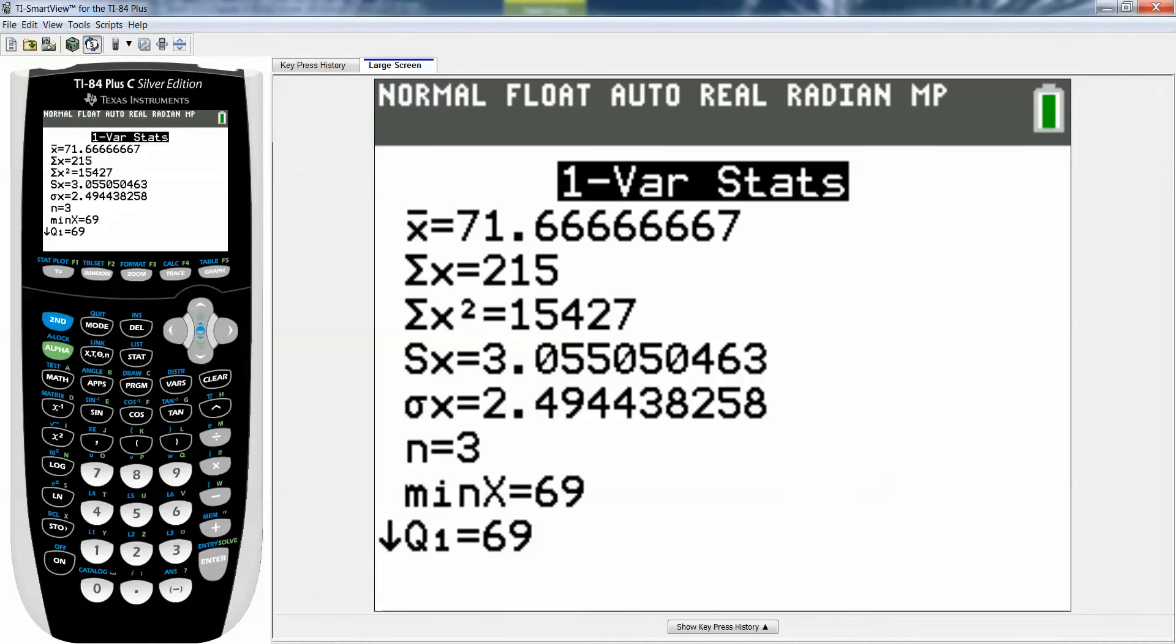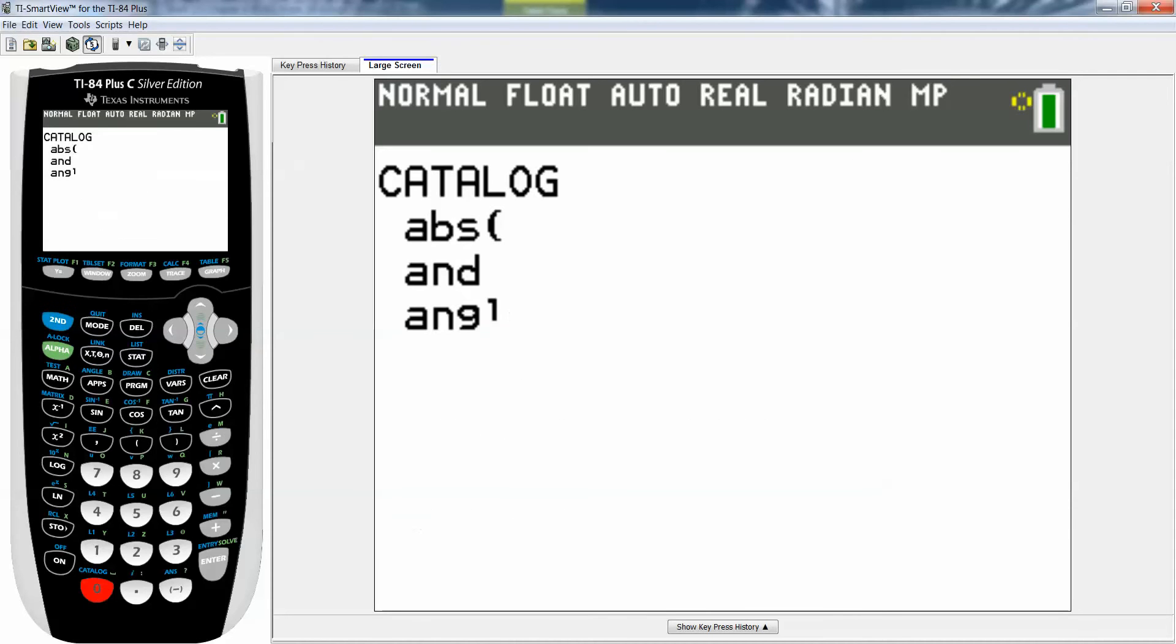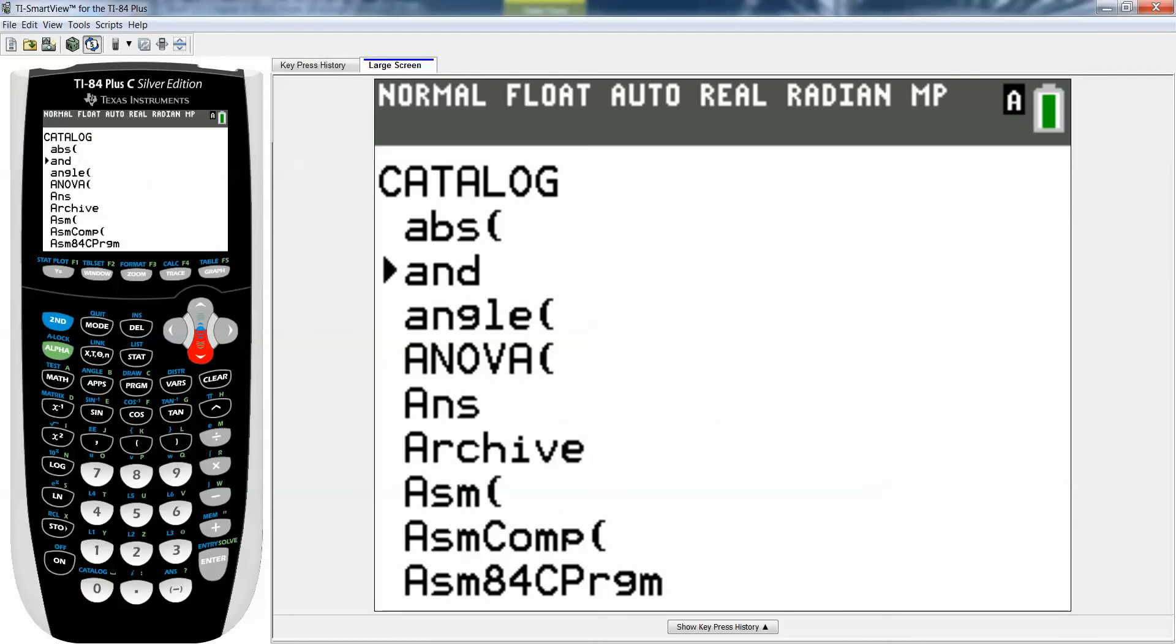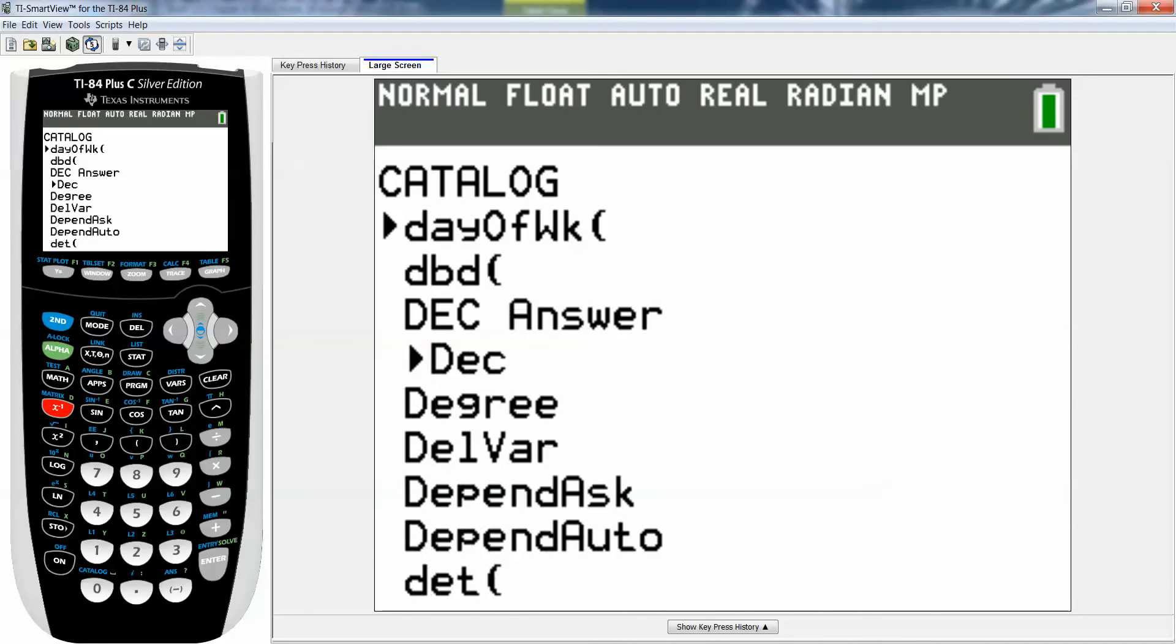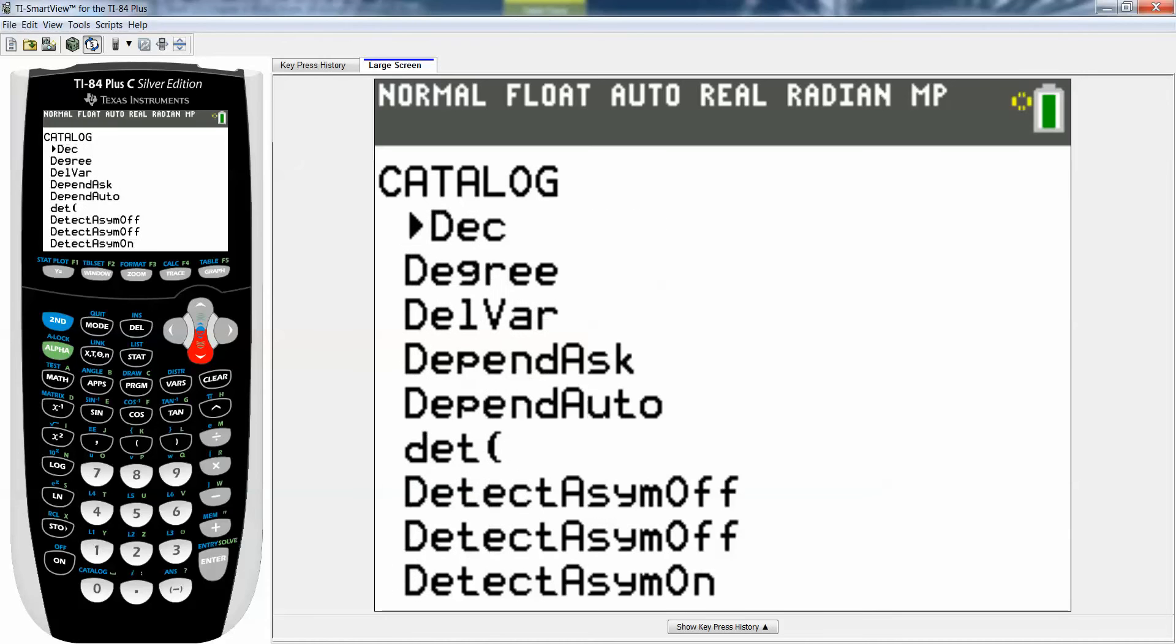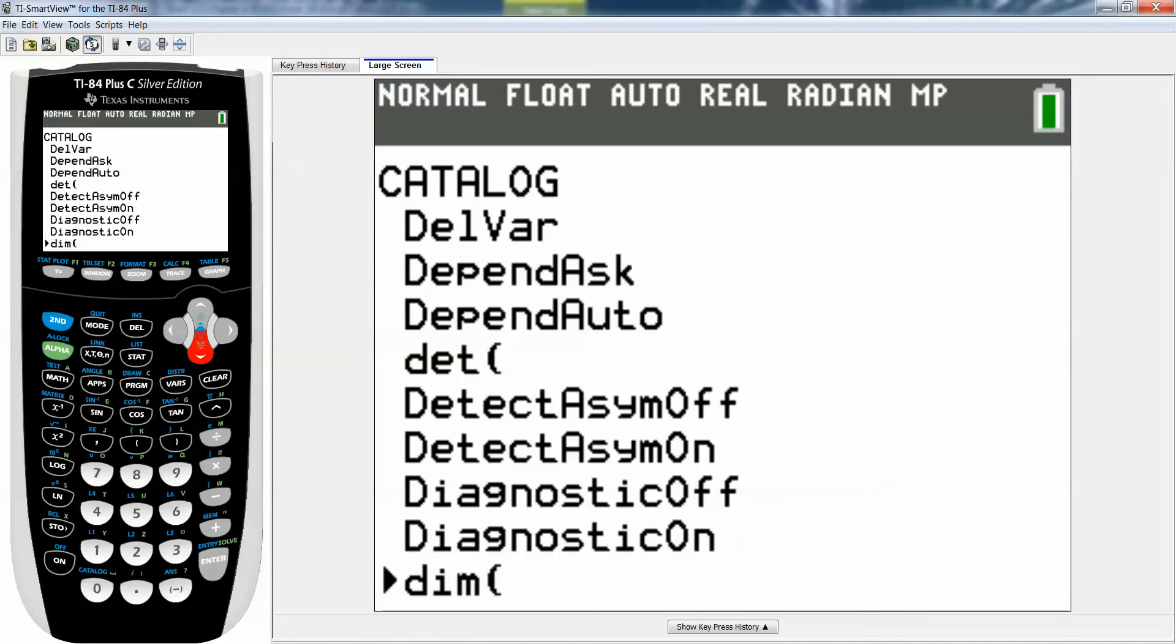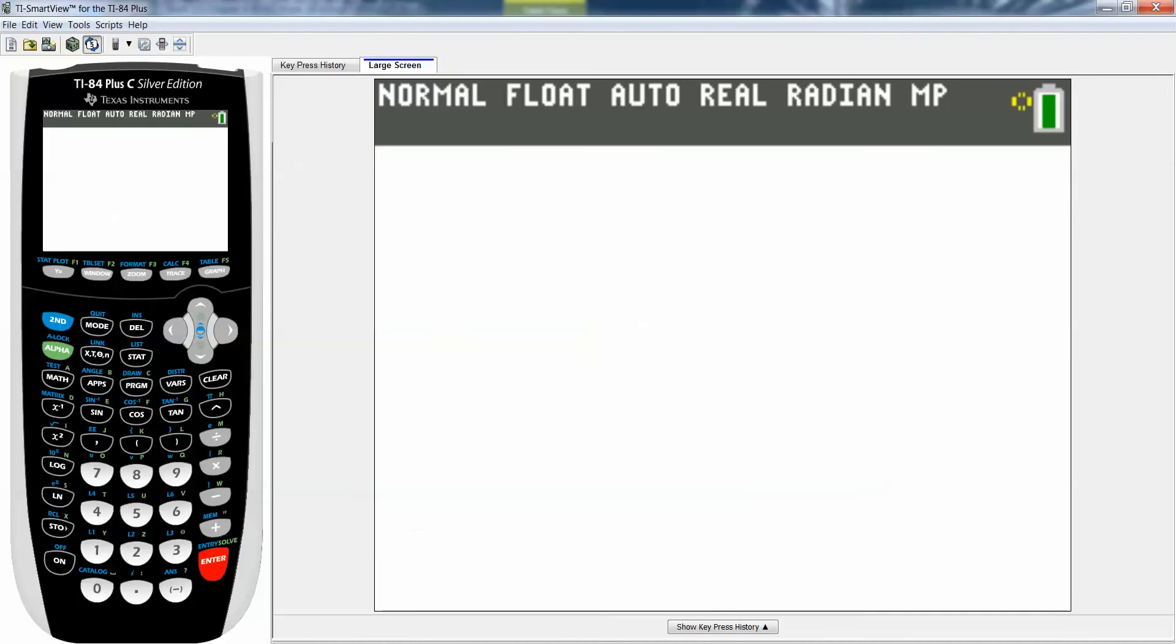You go to catalog, so second zero to see the catalog, and you scroll down to the D's. Or if you're really crafty you hit alpha D above the X to the negative 1 button. You scroll down until you get to diagnostic on. Once you have the arrow on diagnostic on you press enter and then press enter and it'll say done.